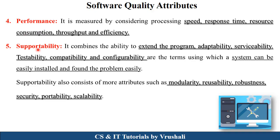The next one is supportability. Supportability includes many factors: first, extended program — meaning in the future you should be able to add new features to your product. There is adaptability and serviceability — good service for maintaining a particular product. It also includes testability, compatibility — meaning the system can be easily installed on each and every device and operating system — and configurability, meaning if any problem is generated, you can easily find out what type of problem it is. Supportability also includes modularity, reusability, robustness, security, portability, and scalability. Portability means the product is used on different types of devices and operating systems, providing security and robustness as well. These are the software quality attributes.